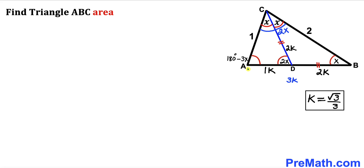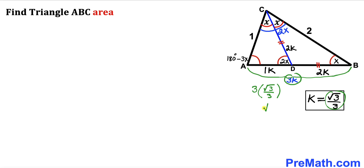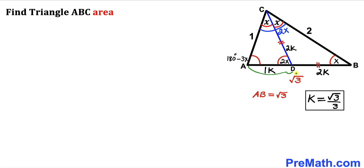Now, the whole AB length is 3 times k, and our k value is square root of 3 divided by 3. So AB equals 3 times square root of 3 divided by 3, which simplifies to square root of 3. Therefore, side length AB turns out to be square root of 3.